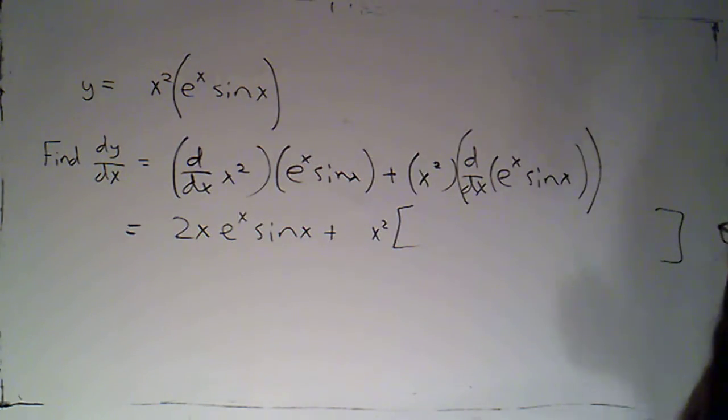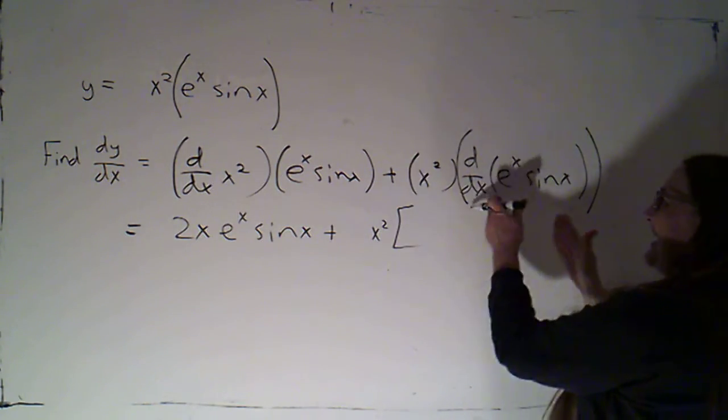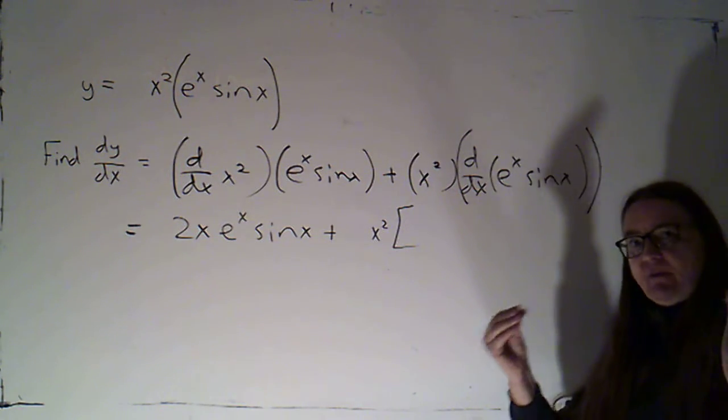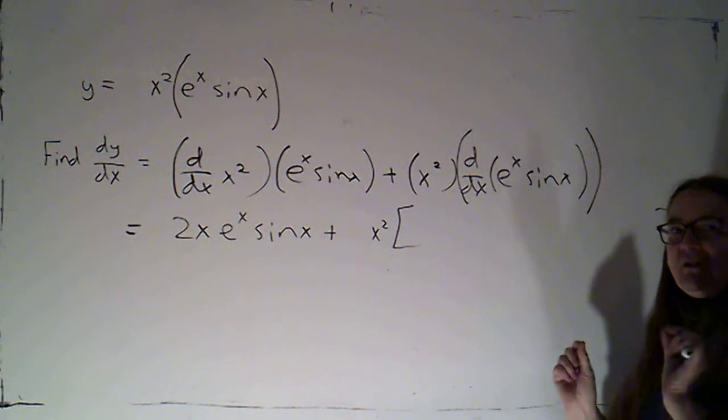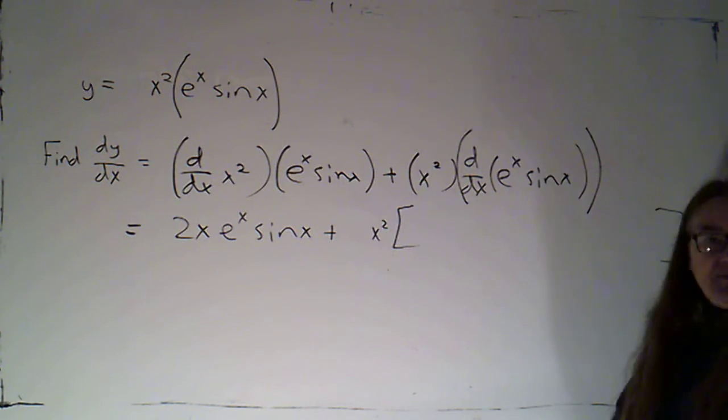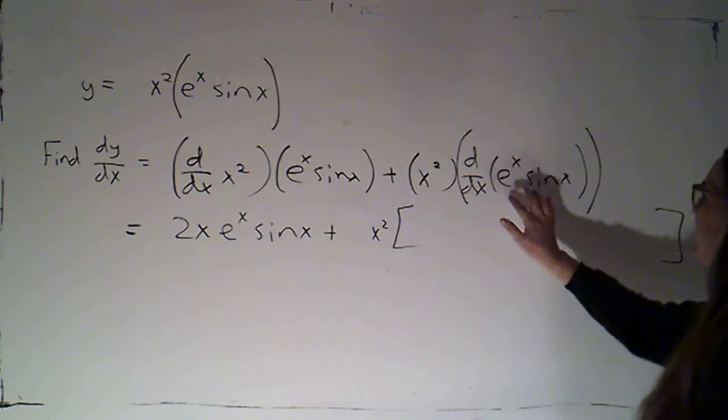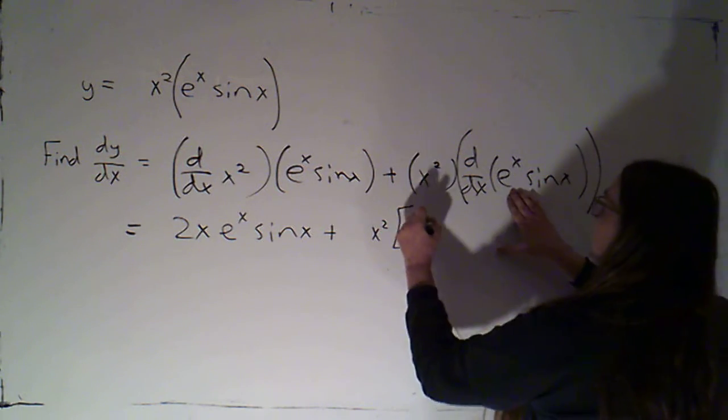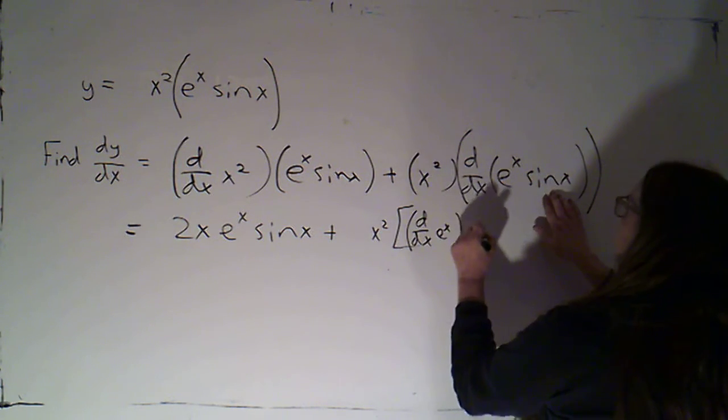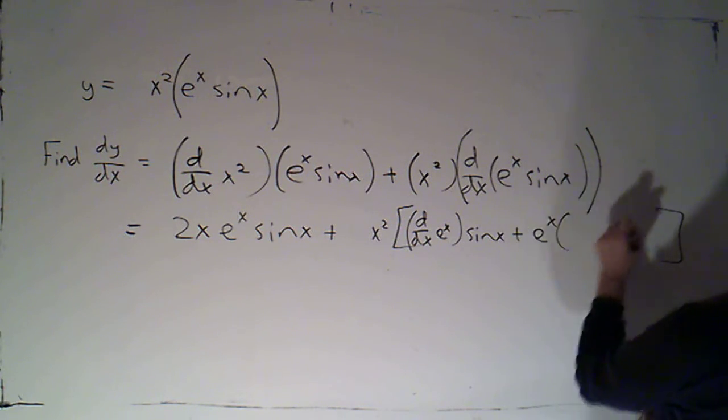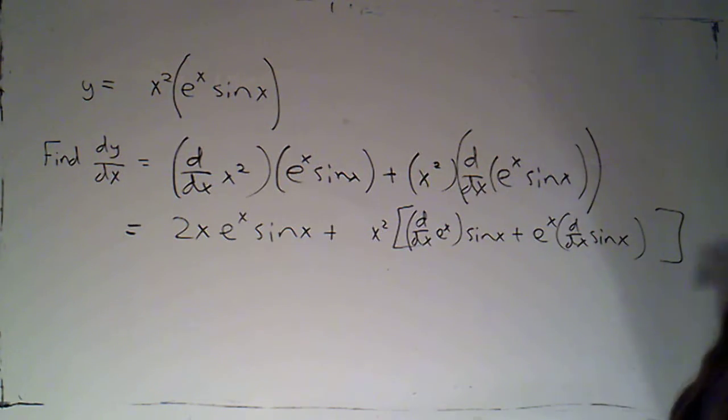I'm going to be multiplying that by this whole thing. I know product rule is going to give me a sum of two terms. Make sure you've got brackets or parentheses so that both terms are getting multiplied by the x squared. I'm just going to write out product rule. So we'll have the derivative of e to the x times sine x plus e to the x times the derivative of sine x.